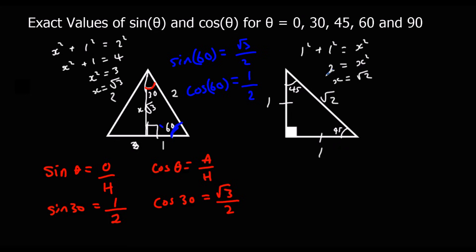To do the 45, I want to look at this triangle. So again, sin theta is opposite over hypotenuse. So we pick one of these angles. Let's go here. So opposite is 1, so sin 45 equals 1 over hypotenuse, which is root 2. And cos 45 is adjacent over hypotenuse, so that's also 1 over root 2.